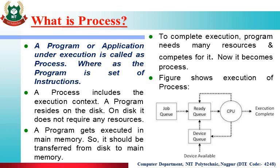Out of the number of processes, some processes get ready for starting their execution. These processes come from the job queue to the ready queue, and the ready queue is your RAM. The operating system selects a particular process from the ready queue using different scheduling algorithms and sends processes one by one to the CPU.